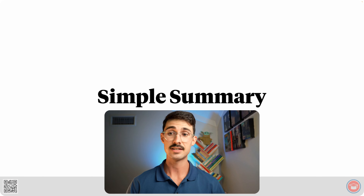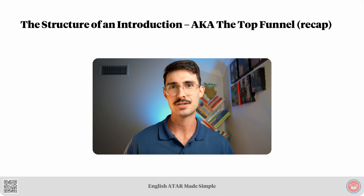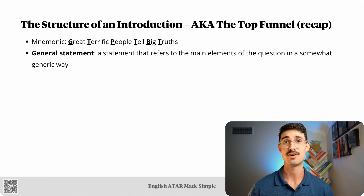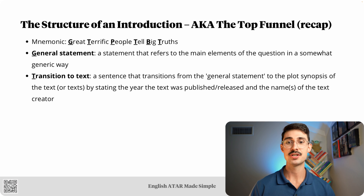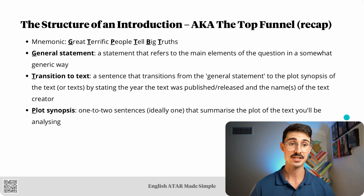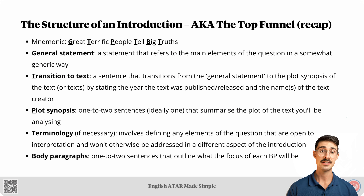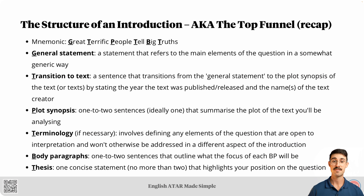That is all the main content for this lesson. Let's do a simple summary. We recapped the structure of an introduction — the top funnel of our double-ended drinking funnel. Our mnemonic is: Great, terrific, people tell big truths. The G refers to the general statement — a statement that refers to the main elements of the question in a somewhat generic way. Then we have the transition to text — a sentence that transitions from the general statement to the plot synopsis by stating the year the text was published or released and the name of the text creator. From there, the plot synopsis — one to two sentences, ideally one, that summarizes the plot of the text you'll be analyzing. Then the terminology element — defining any elements of the question that are open to interpretation and won't otherwise be addressed in a different aspect of the intro. From there, body paragraphs — one to two sentences that outline what the focus of each BP will be. Finally, the thesis — one concise statement, no more than two, that highlights your position on the question.